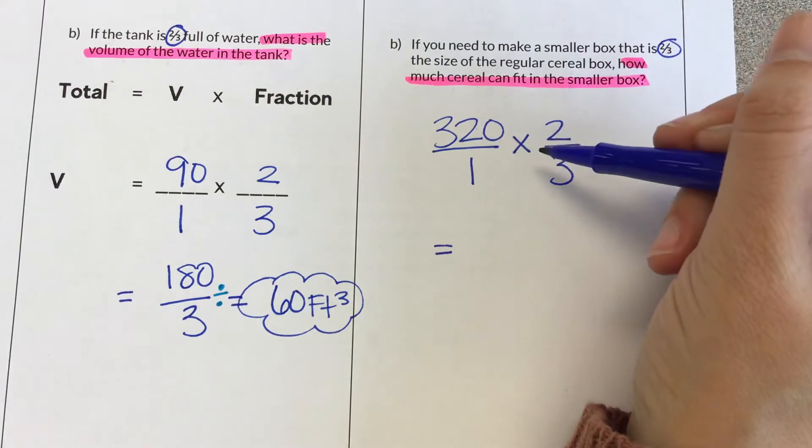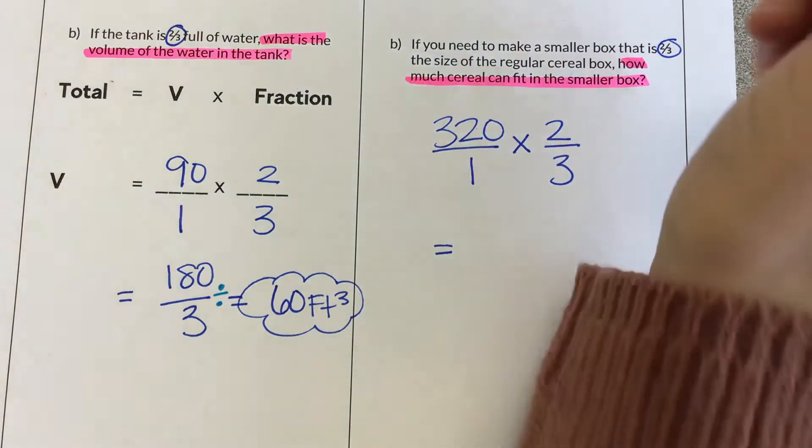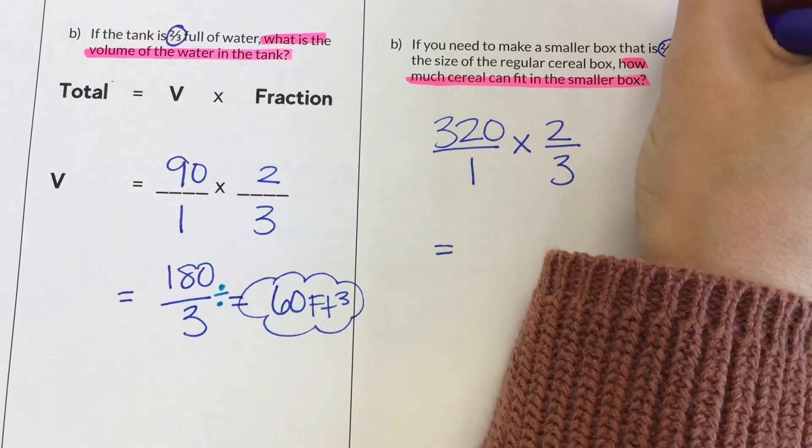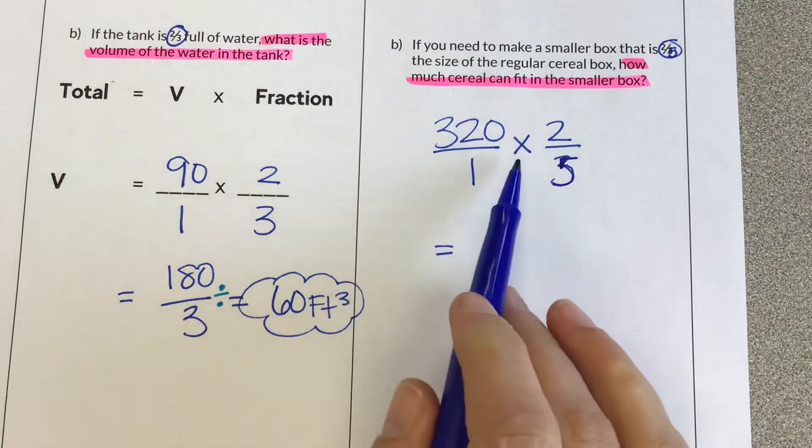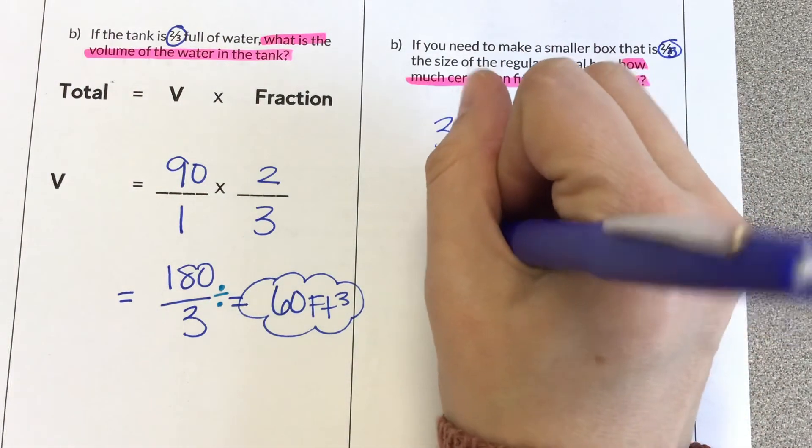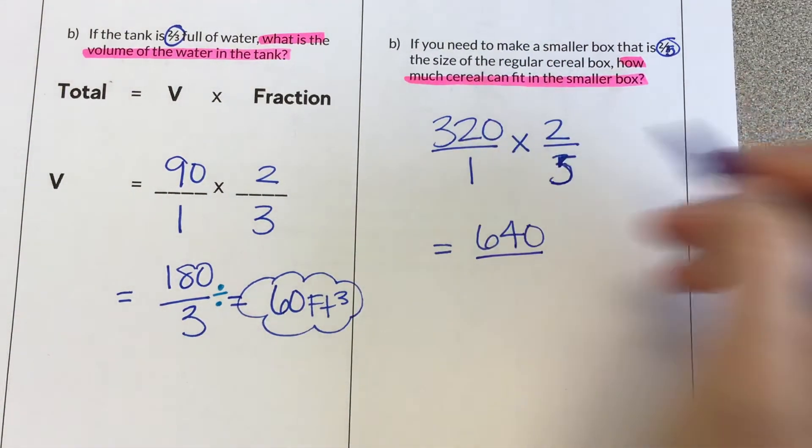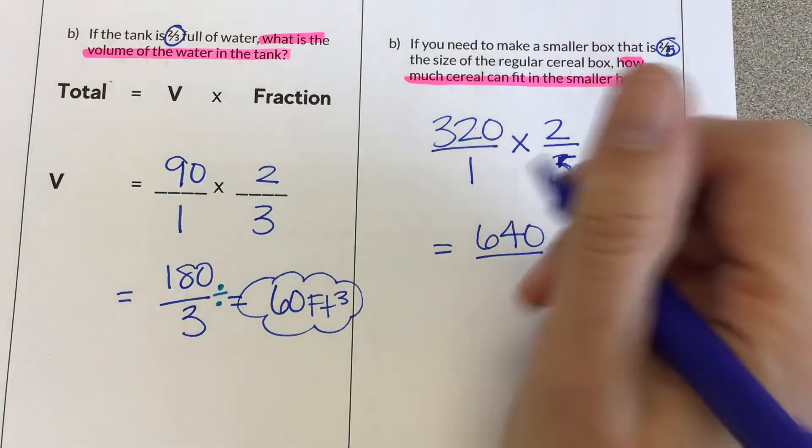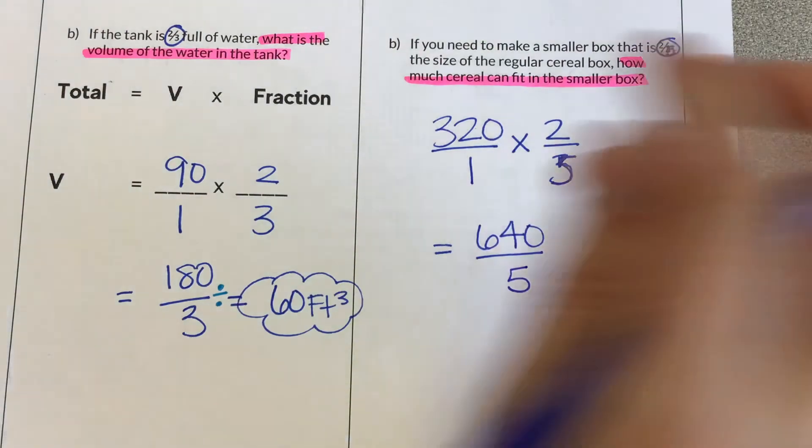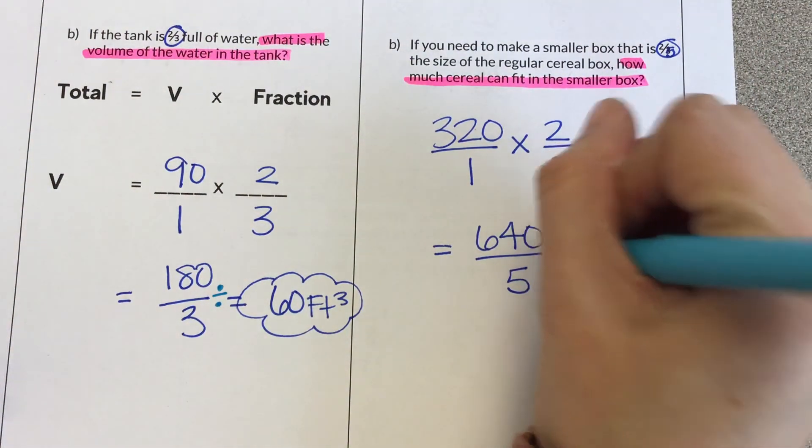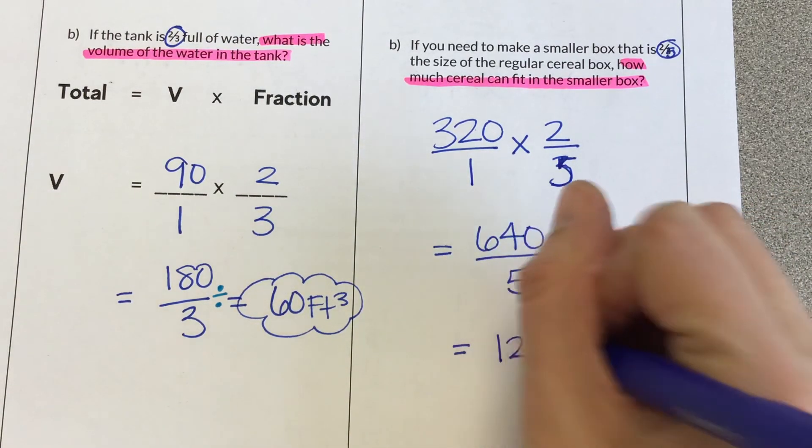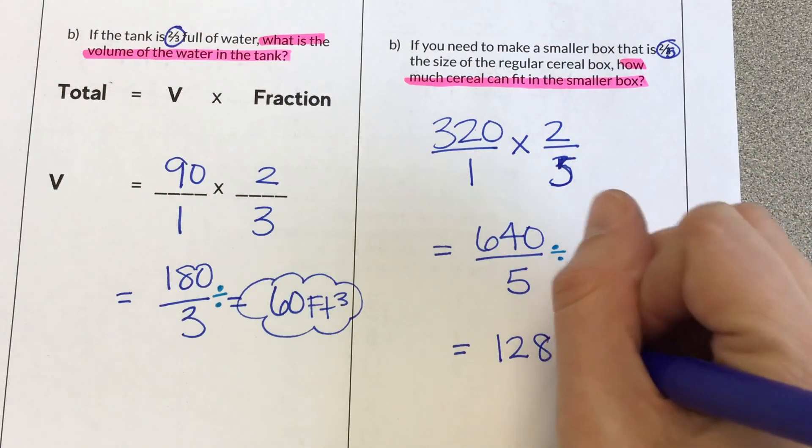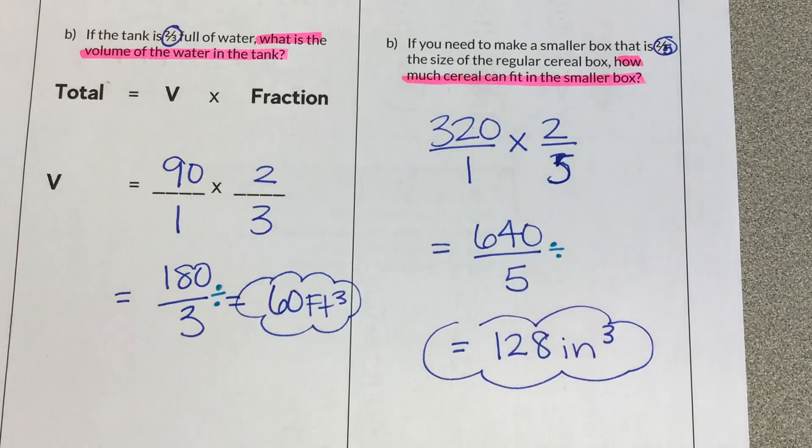So I'm multiplying 320 times 2. Actually, I think I need this to be fifths. Let's make that fifths. Okay? Multiplying 320 times 2, and we are getting 640. I changed this to a 5, so 1 times 5 is 5. And remembering that that fraction bar means division. So 640 divided by 5 is equal to 128. Our units are inches cubed. And that's it.